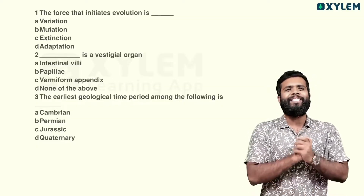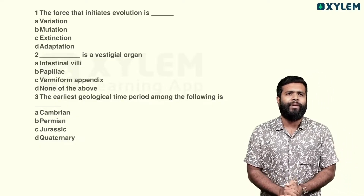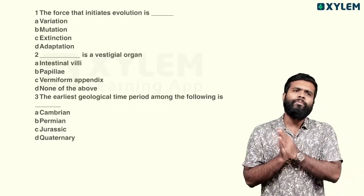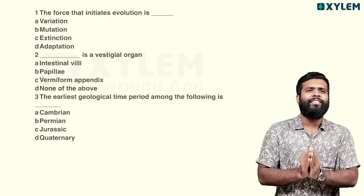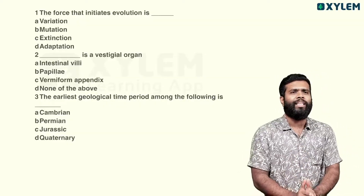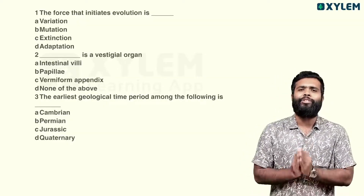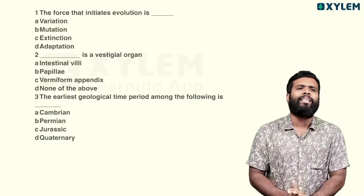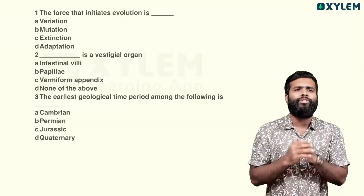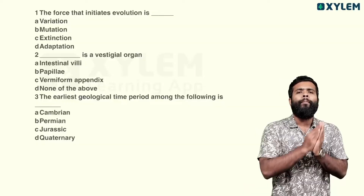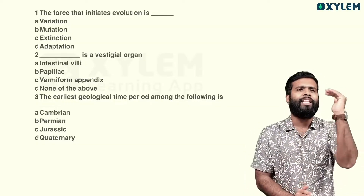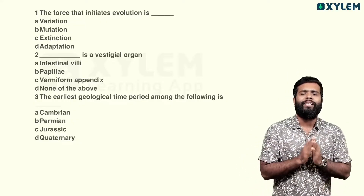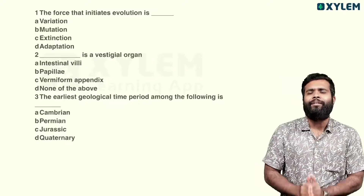Next question: the earliest geological time period among the following is. We are looking at the geological time periods. The earliest title is Cambrian. Other periods include Permian, Jurassic, and Quaternary. The correct order places Cambrian as the earliest. So option A — the Cambrian period — is the answer to the third question.